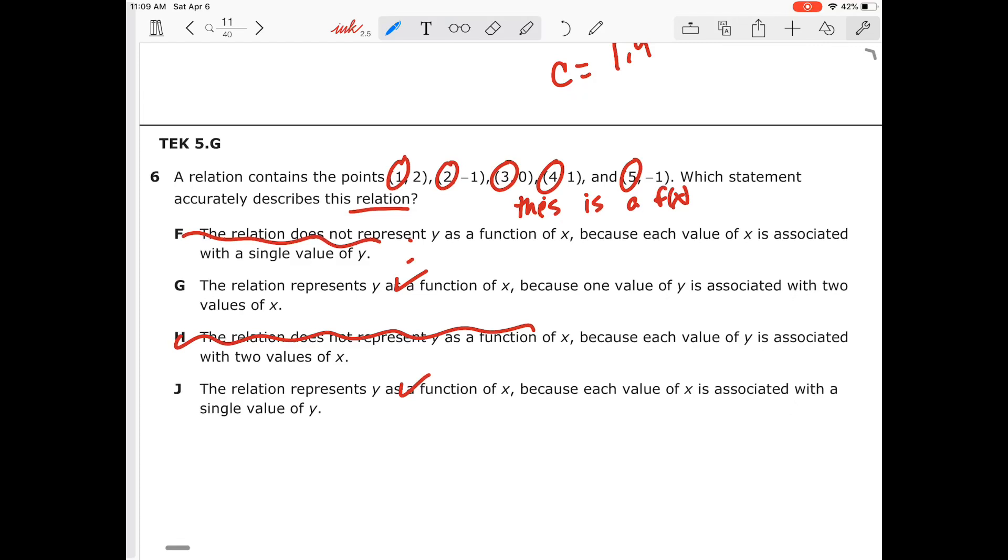What is enough to say that it's a function is in J because each value of x is associated with a single value of y. Now, that includes G. So J includes the comments of G. You have one value of y associated with each value of x. Think about y equals x squared. That is a function. Remember, function is defined by your input. For every input, there is exactly one output. So J is our answer choice.